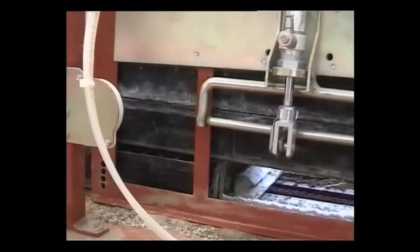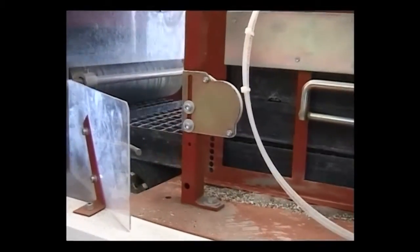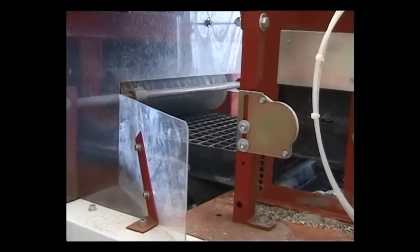We now move from the tray destacker along to the filling section where you can see a roller holding the tray in place while the tray feeds into the tray filler.